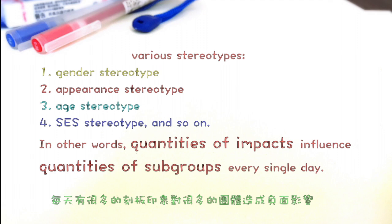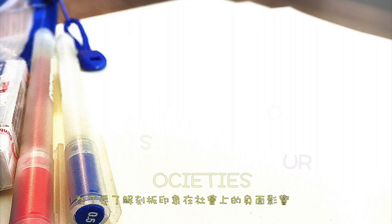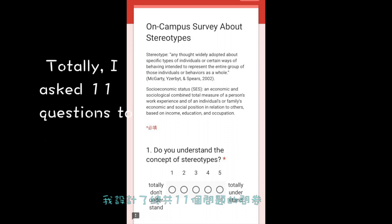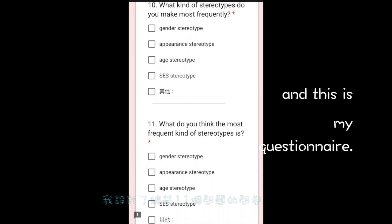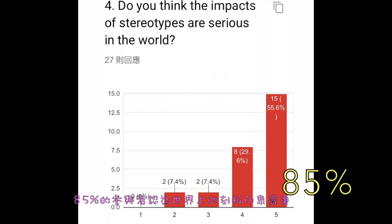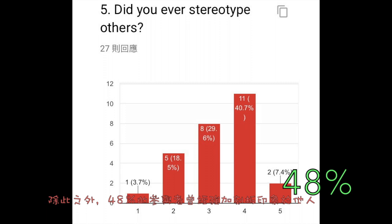Third, stereotypes in our societies. To understand the impacts of stereotyping in a society, I did a small on-campus survey of students' opinions about stereotypes at the University of Southern California. In total, I asked 11 questions to my interviewees, and this is my questionnaire. The result is, 54% of the participants think that this phenomenon is serious on campus, and 85% of the participants think that this phenomenon is serious in the world. Additionally, 48% of the participants said they have ever stereotyped others before, and 53% of the participants said they have ever been stereotyped by others.